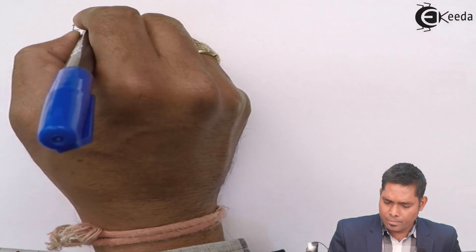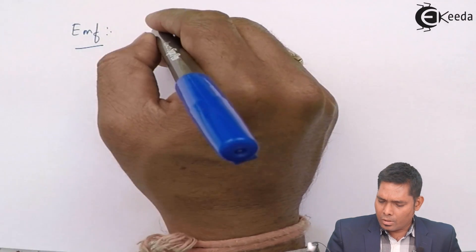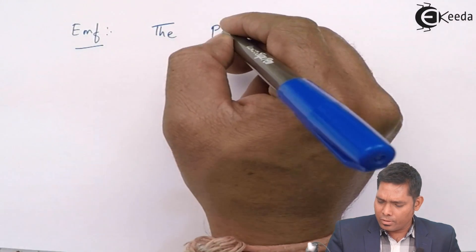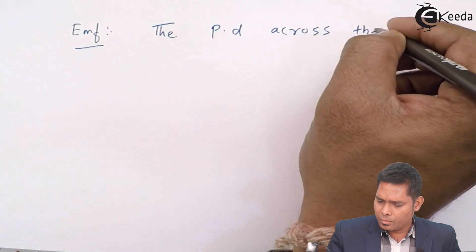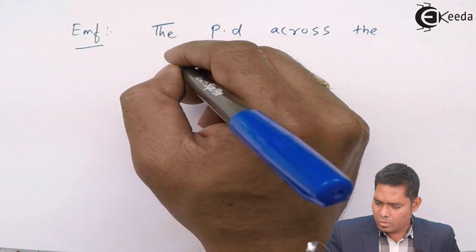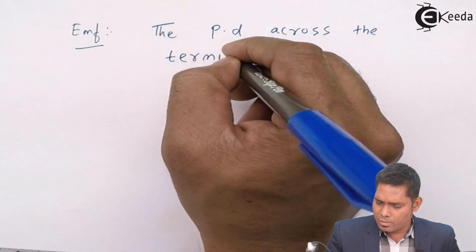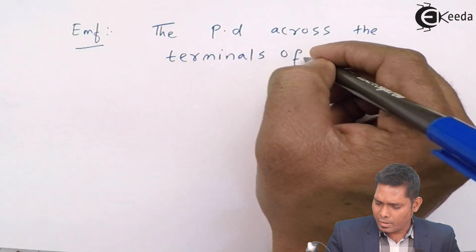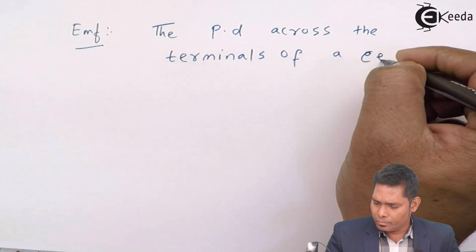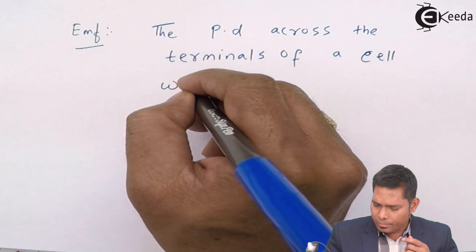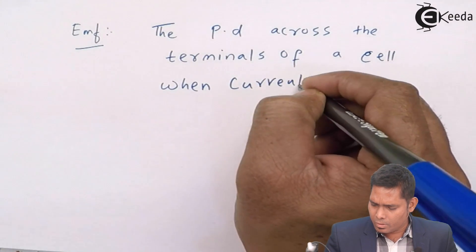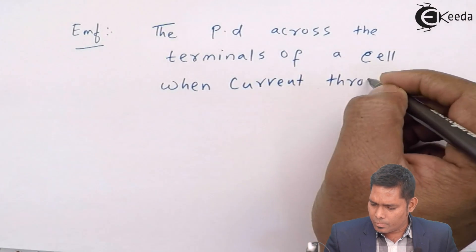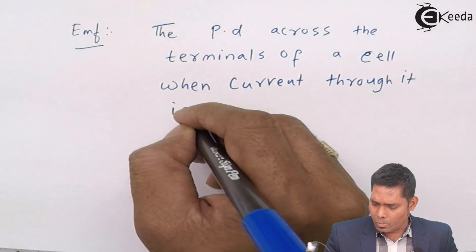The EMF is basically the potential difference across the cell. Because the terminals of a cell when current through it is zero.